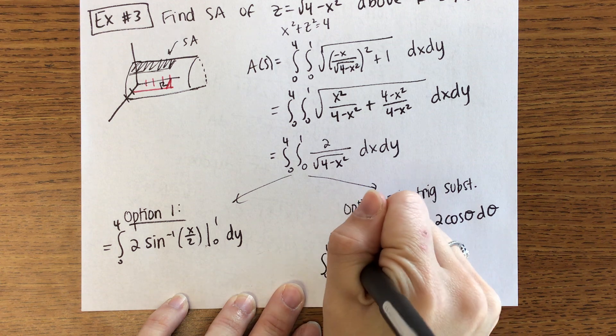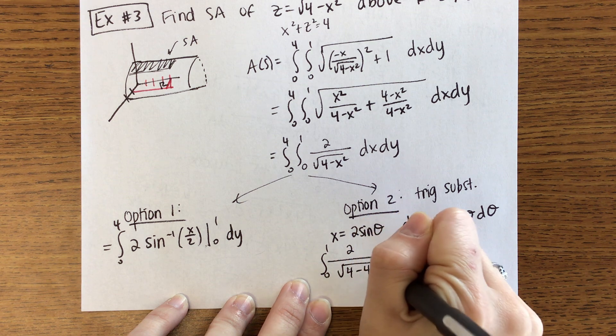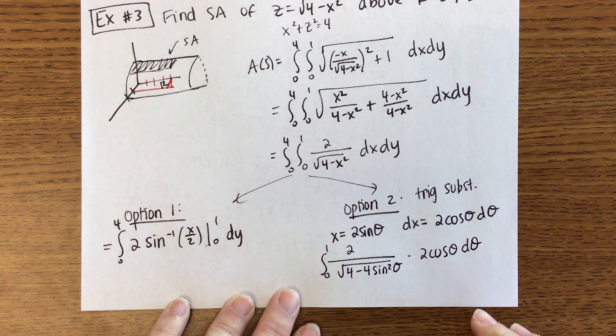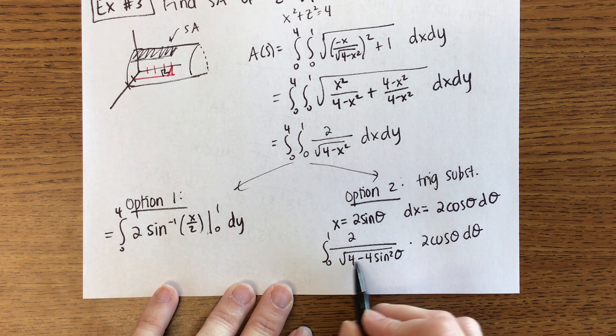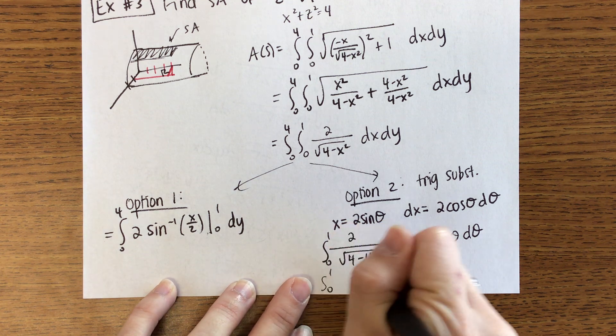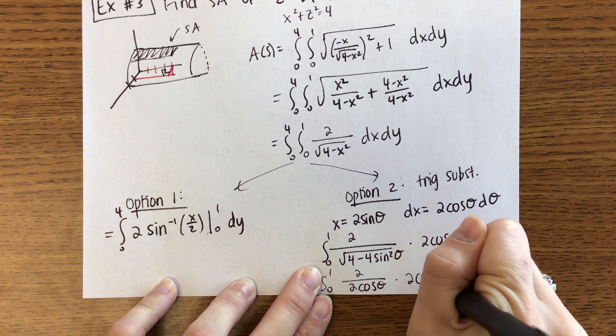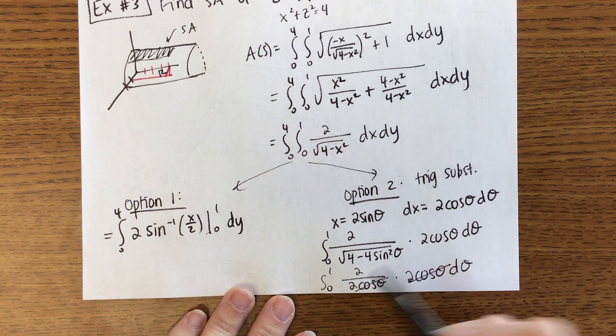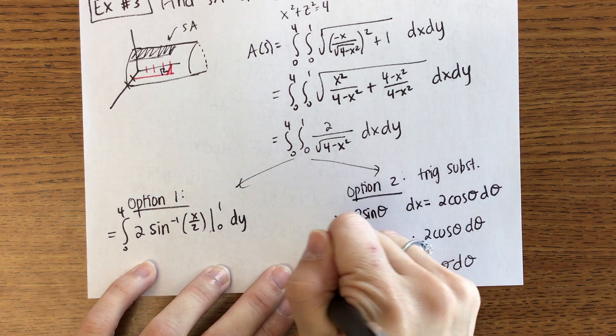So what happens then is you get 2 over the square root of 4 minus 4 sine squared of theta times 2 cosine of theta d theta. This is going to be 4 cosine squared of theta but then you're taking the square root. So it ends up being 2 over 2 cosine of theta times 2 cosine of theta d theta. So those are done. Then you're just integrating 2. But then of course you still have that 0 to 4 for the dy.